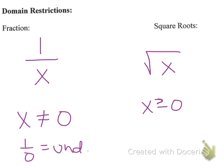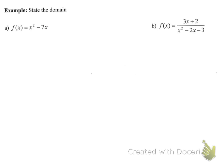So let's try three examples. So letter A is x squared minus 7x. Notice there's no fraction, there's no square root, therefore there's no restrictions. So if there's no restrictions, my domain would just be negative infinity to infinity. And that's it.